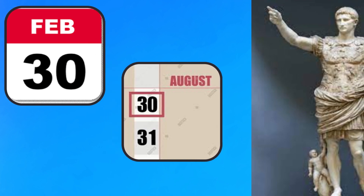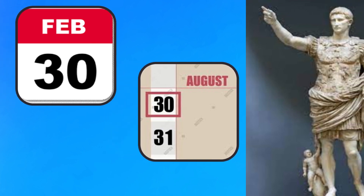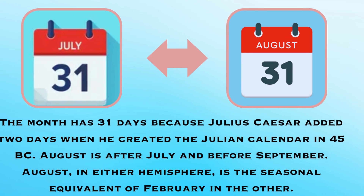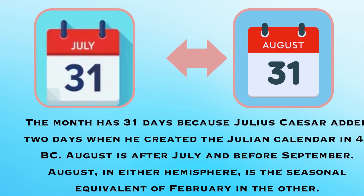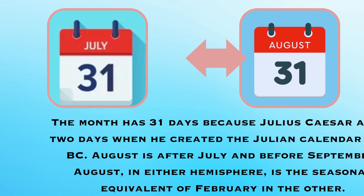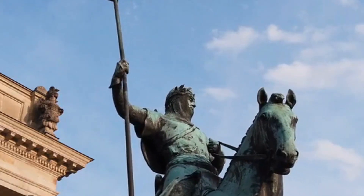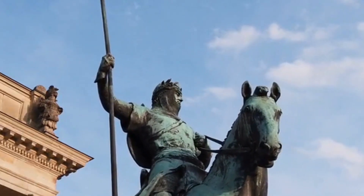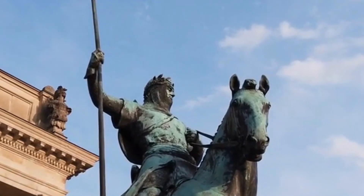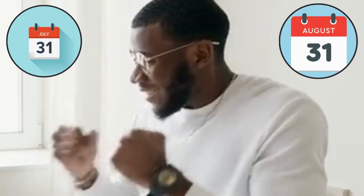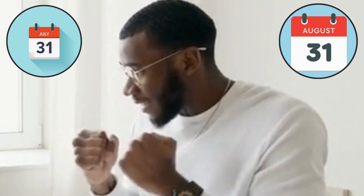In February, there are consequences. In July and August, there are both 31 days — this is the ego clash. In history, there is no real problem with this, but there is a lot of interesting detail. In July and August, there are 31 days, and this is an interesting fact.